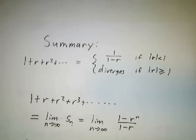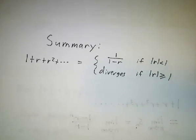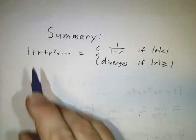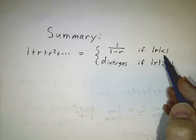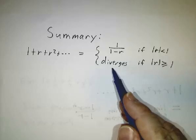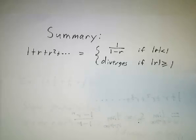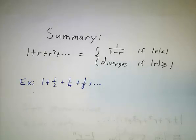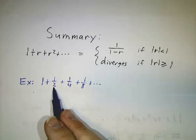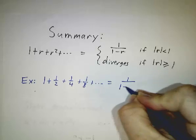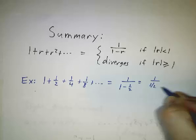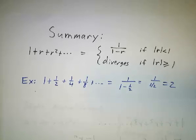So to sum up: if you have a geometric series and you want to figure out what happens as you take it all the way to infinity, the sum is 1 over 1 minus r if the ratio is strictly less than 1 in magnitude — anything between negative 0.999... and positive 0.999... — and it diverges if the absolute value of r is 1 or bigger. For example, the series 1 plus 1/2 plus 1/4 plus 1/8 and so on gives 1 over 1 minus 1/2, which is 1 over 1/2, which is 2.